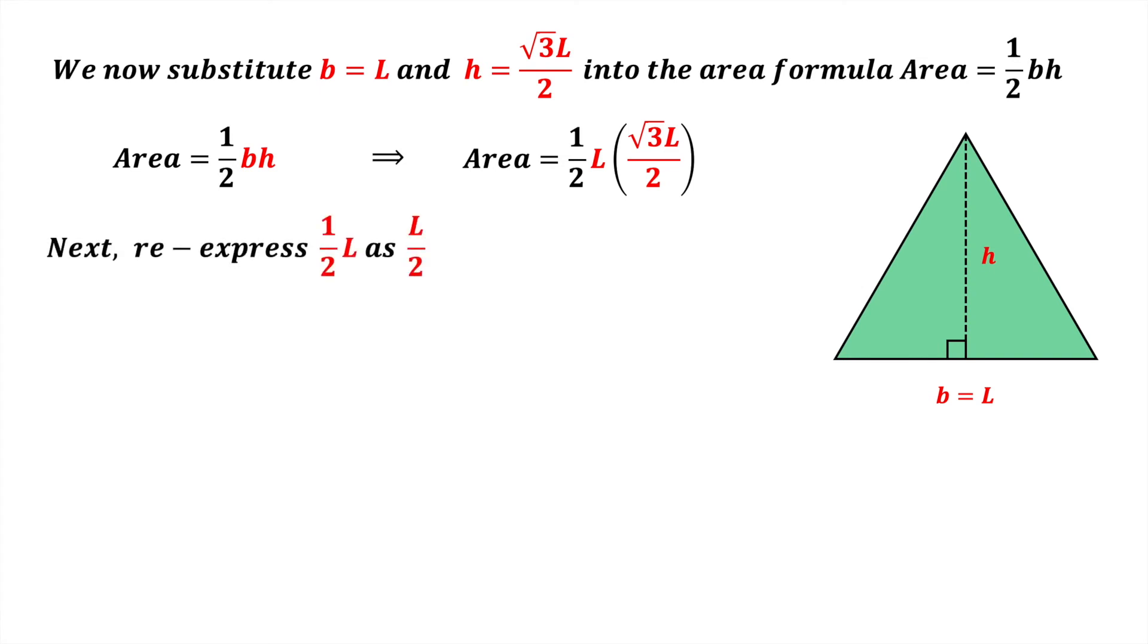Next, re-express a half L as L divided by 2. We now have area equals L divided by 2 times root 3L divided by 2. Finally, multiply the two fractions as follows.